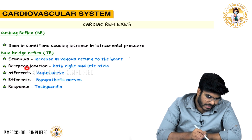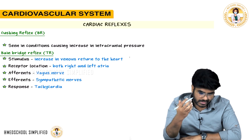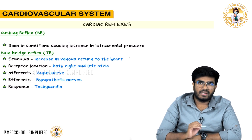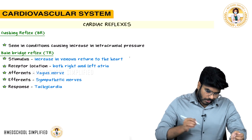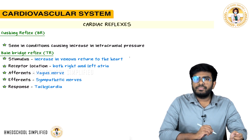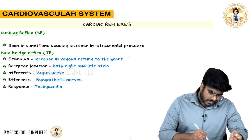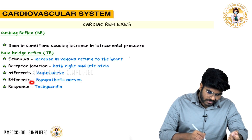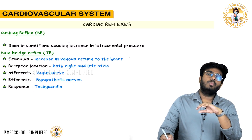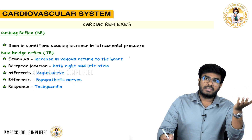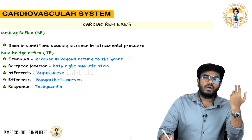The receptors involved are volume-sensing receptors present in both the right and left atria. When activated, the afferent information travels via the vagus nerve to the central nervous system, signaling that more volume is coming. The CNS then sends information back to the heart via sympathetic nerves, activating them and increasing heart rate. So increased venous return to the right atrium automatically raises heart rate through this reflex arc.